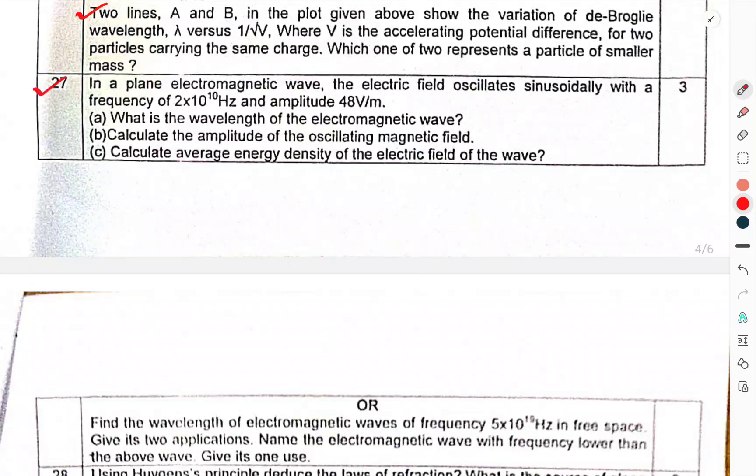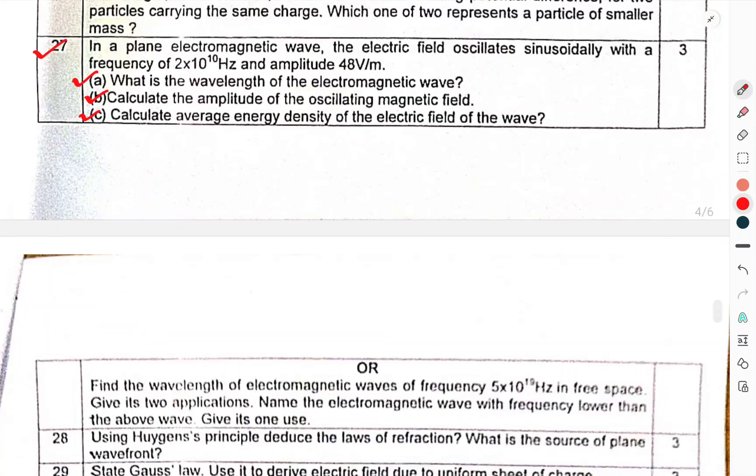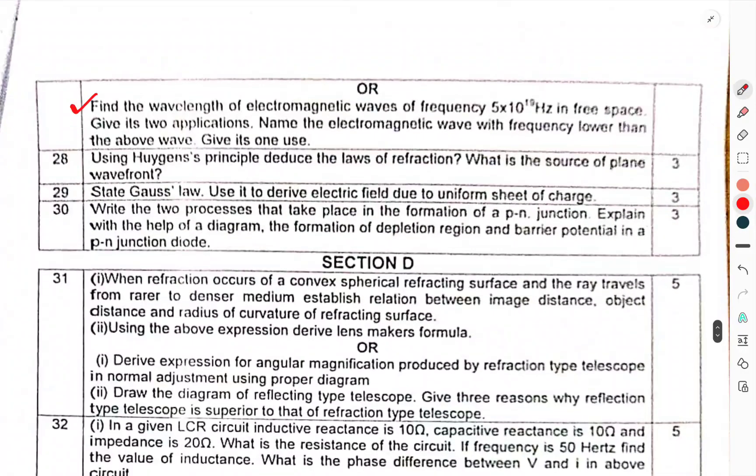Question 27: In a plane electromagnetic wave, the electric field oscillates sinusoidally with a frequency of 2 into 10 raised to power n hertz, amplitude 4 volts per meter. What is the wavelength of the electromagnetic wave? Calculate the amplitude of the oscillating magnetic field. Calculate the average energy density of the electric field of the wave. Or, find the wavelength of electromagnetic wave of frequency 5 into 10 raised to power 19 hertz in free space. Give its two applications. Name the electromagnetic wave with frequency lower than the above wave. Give it one use.